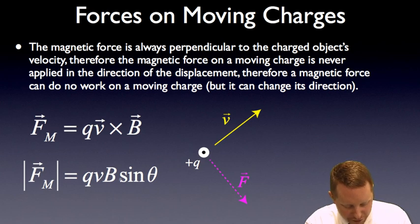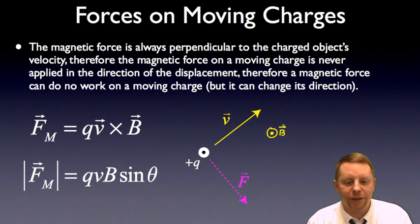Where the magnitude, fm, is qvb sin theta. Where theta is the angle between the velocity vector and the magnetic field strength vector. So in this case, let's assume that we have the magnetic field pointing out of the screen toward us. If you take your right hand pointed in the direction of the fingers of your right hand in the direction of the velocity, bend them in the direction of the magnetic field out of the plane of the screen, your thumb should point in the direction of the force or in this direction.